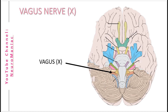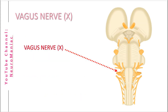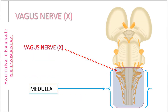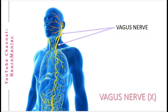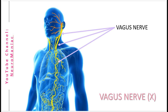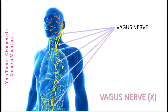Cranial nerve number 10, the vagus. This nerve originates from 4 neuronal cell bodies shown here and emerges out of the medulla region. From the medulla, the nerve exits the cranium via the jugular foramen and descends down the neck, travels past the chest, then the abdomen and down to the colon.